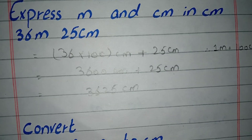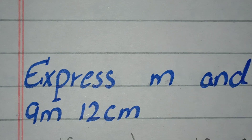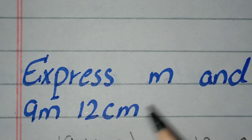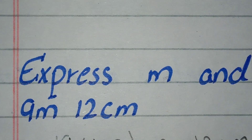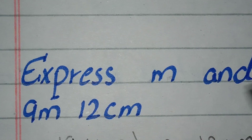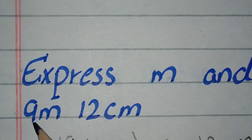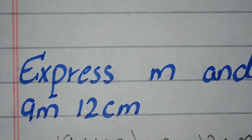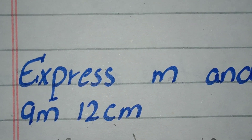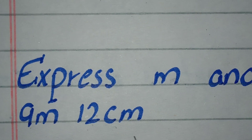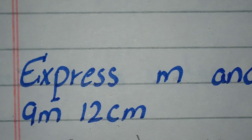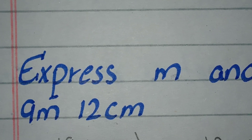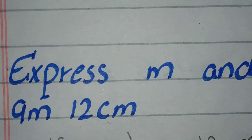Now I have a practice question for you: 9 meters and 12 centimeters — convert it into centimeters. We put the numbers in: 9 multiplied by 100 gives 900, plus 12 centimeters. So the answer is 912 cm.